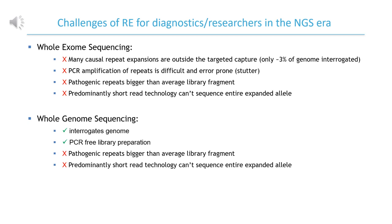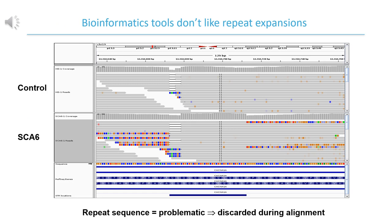Whole genome sequencing addresses several of these limitations, but the predominant commercial implementations still utilise short read whole genome sequencing technologies. An additional complication is that bioinformatics pipelines don't like repeat expansions. Because the sequence cannot align uniquely to the reference — indicated here by the coloured bars in the SCA6 patient — the reads that actually identify there is an expansion repeat present are often discarded from the analysis pipeline.